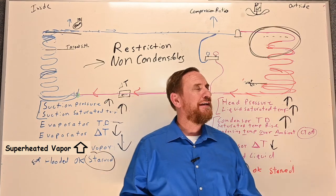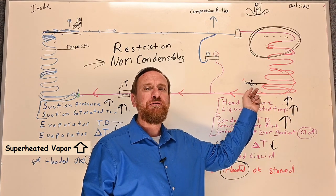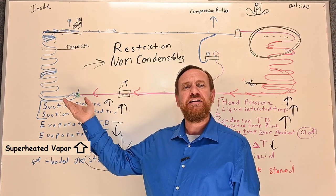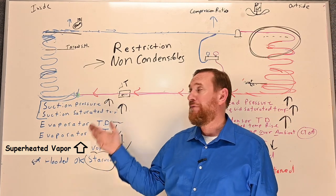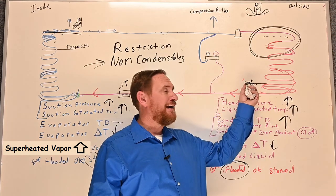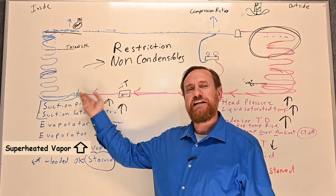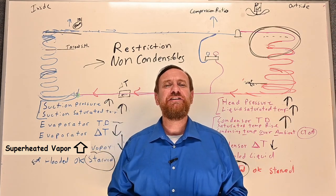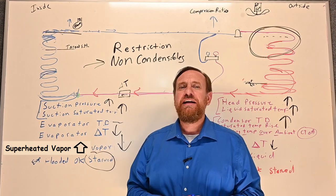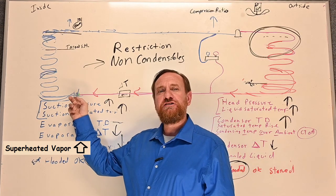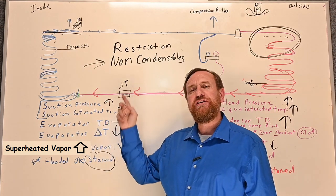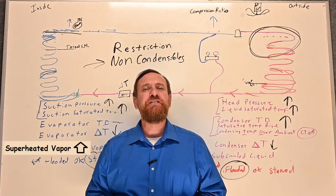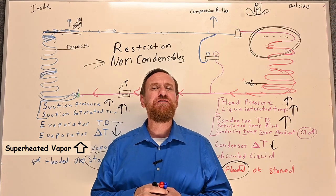Once all the refrigerant is out, it's very easy to diagnose a liquid line restriction. When done, put all connections back together, install a brand new filter dryer, and pressure test to make sure there are no leaks. Then pull a vacuum down below 500 microns, and it's ready for refrigerant.